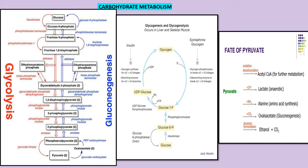If the pyruvate kinase enzyme is missing, pyruvate is not produced and glycolytic intermediates accumulate in blood cells, leading to chronic hemolytic anemia.